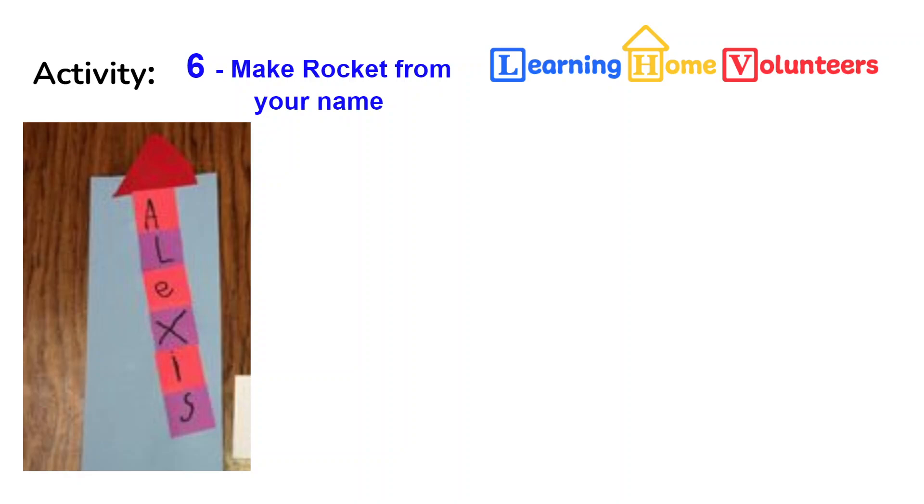This is activity number six. Make a rocket from your name. In your bag, you're going to find that it has squares, one triangle and a string. You're going to use the string of planes coming out of the rocket. The triangle will be the top of the rocket. And the squares will be used to create the body of the rocket.